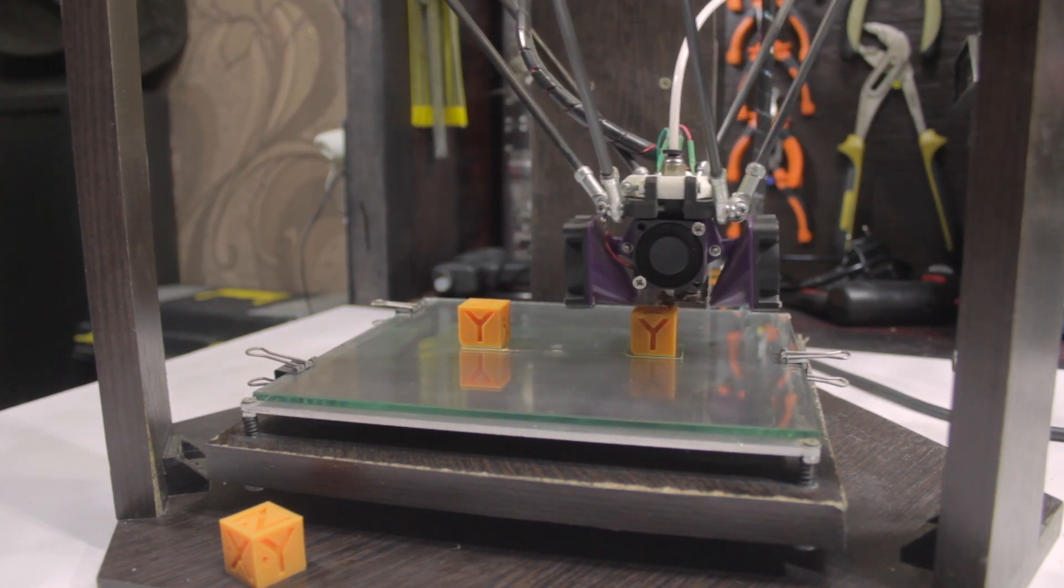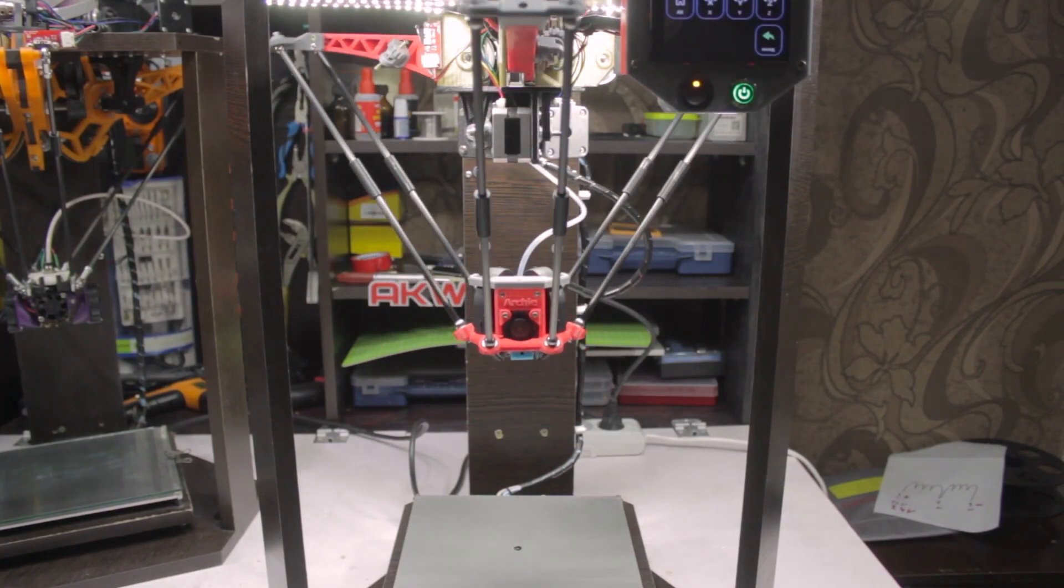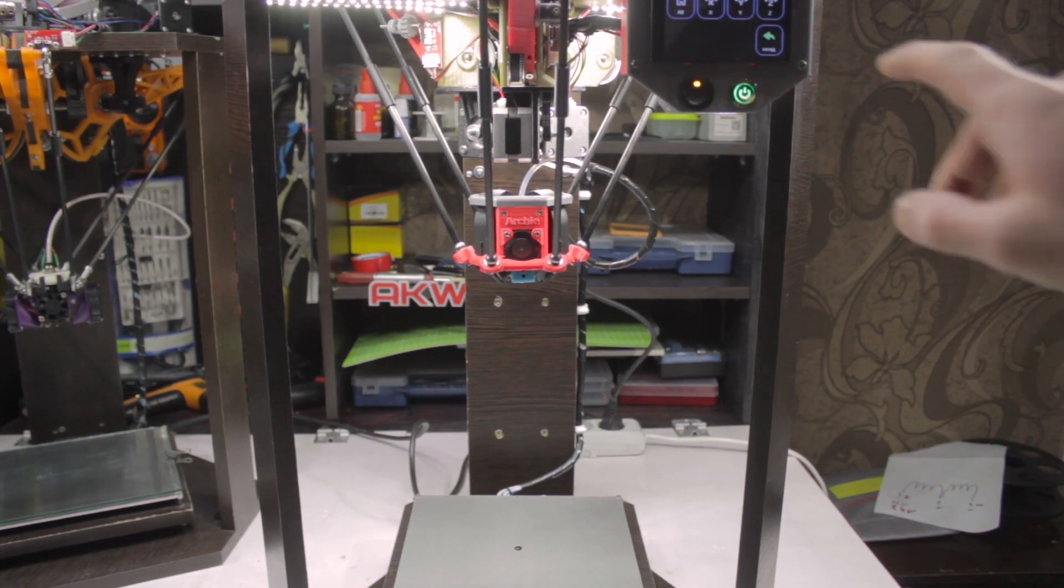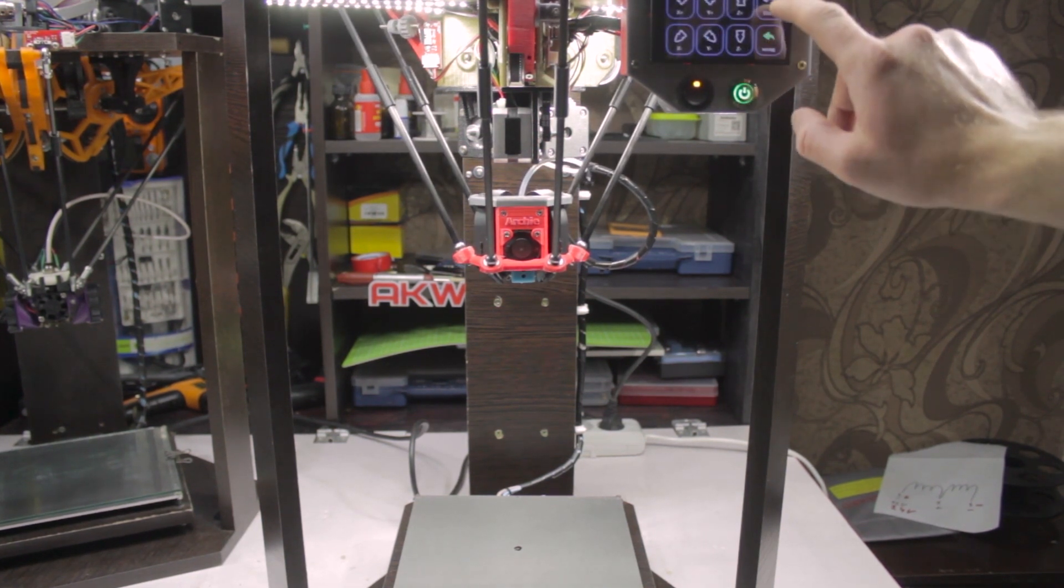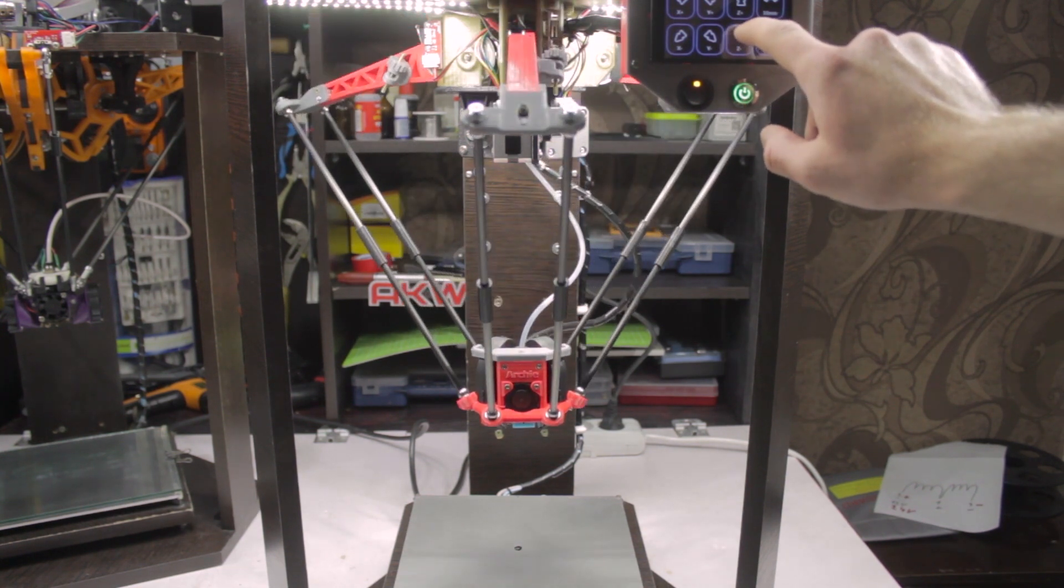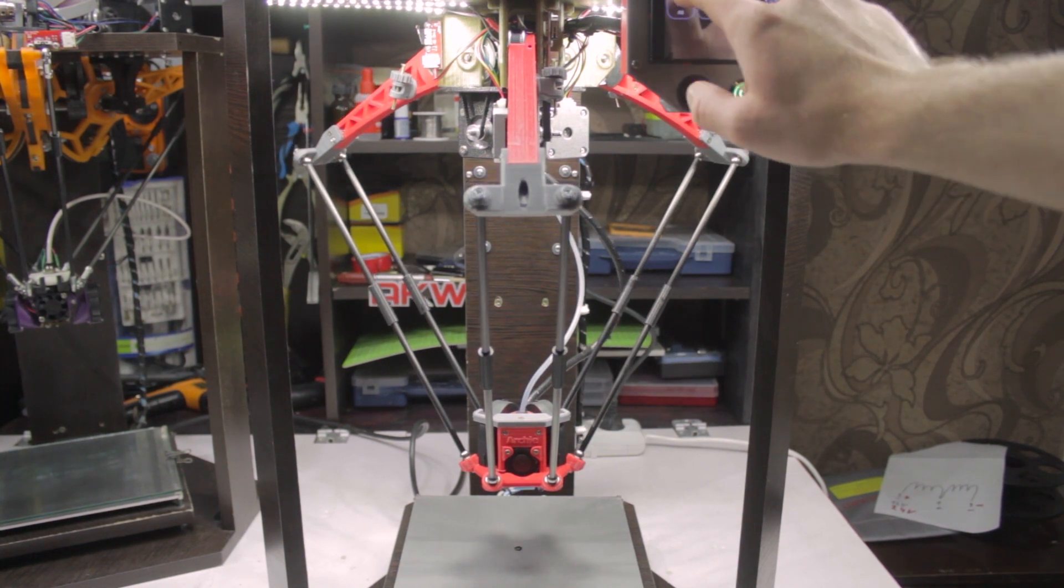As a result today, of the above Delta robot projects, there is not even one that could be called easy to assemble and configure, and which can be assembled and run without dancing with a tambourine, if we are talking about a printer that should print with very high quality. With the second version of the printer, I will try to contribute to the solution of one of the main tasks. This is the simplification of manufacturing and assembly.